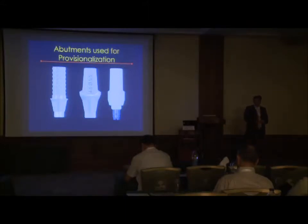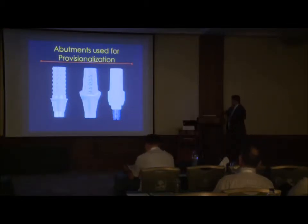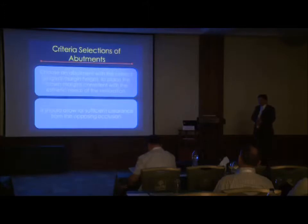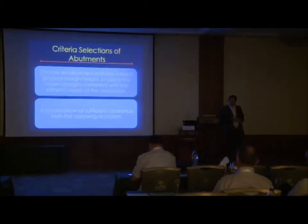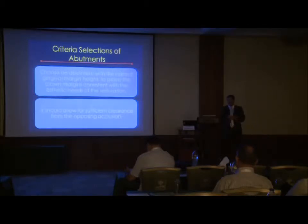Most companies provide what are called temporary or interim abutments, fabricated from different materials — either aluminum or plastic — or you can use a final abutment, sterilized and repurposed as a temporary. Two criteria for abutment selection: first, establish the finish line — either supragingivally, at the gingival level, or just below the gingival margin about 0.5 mm. Second, create space of about 2 mm between the abutment and the crown material.